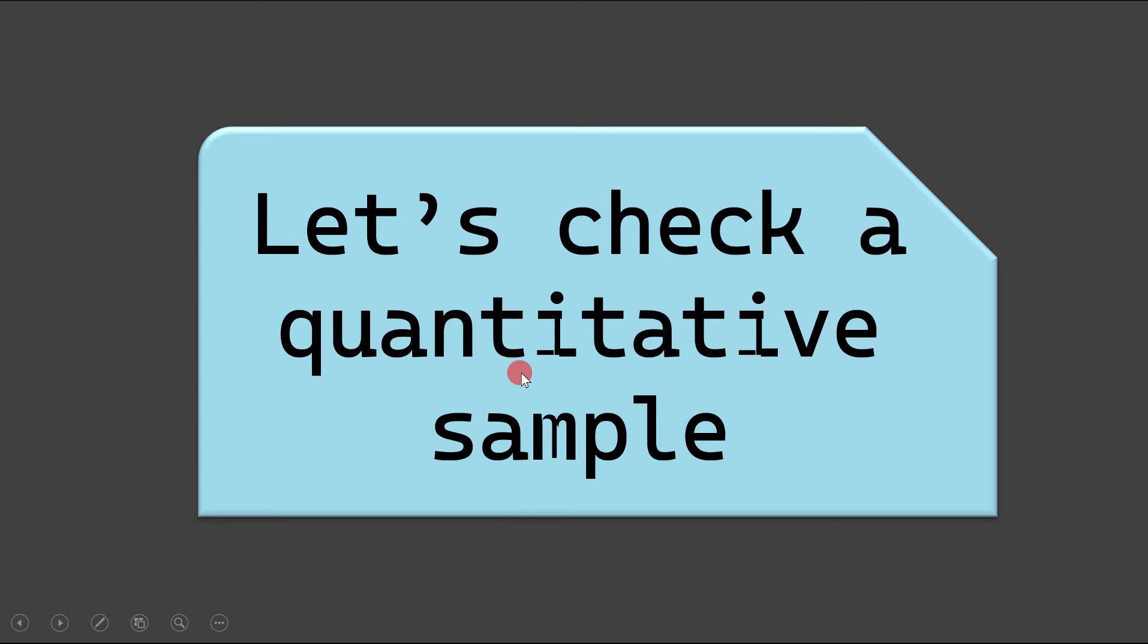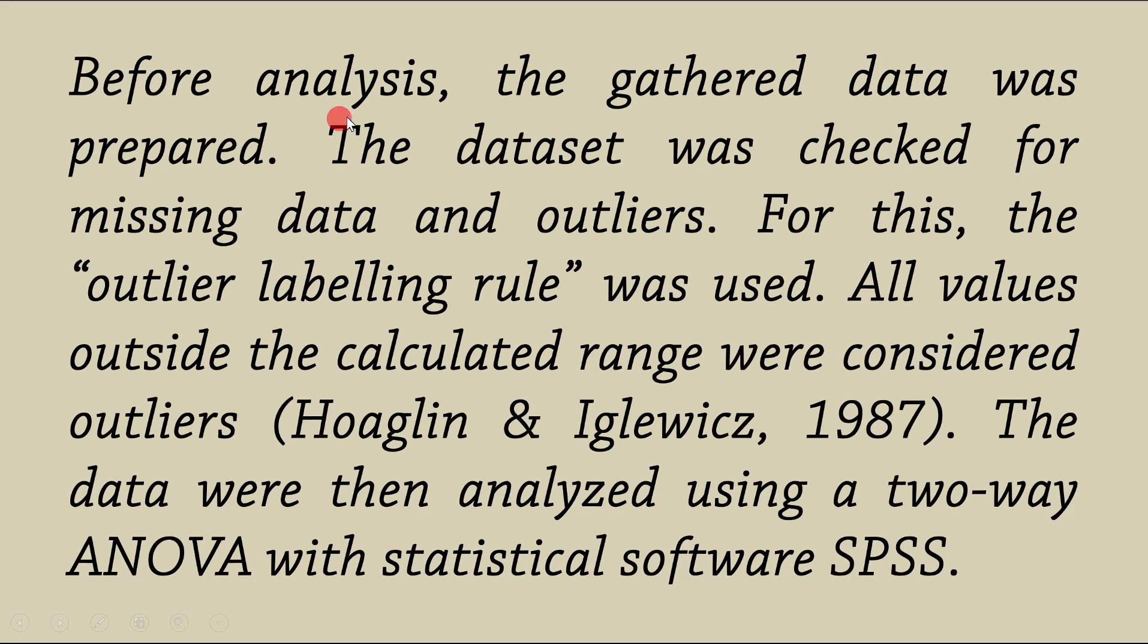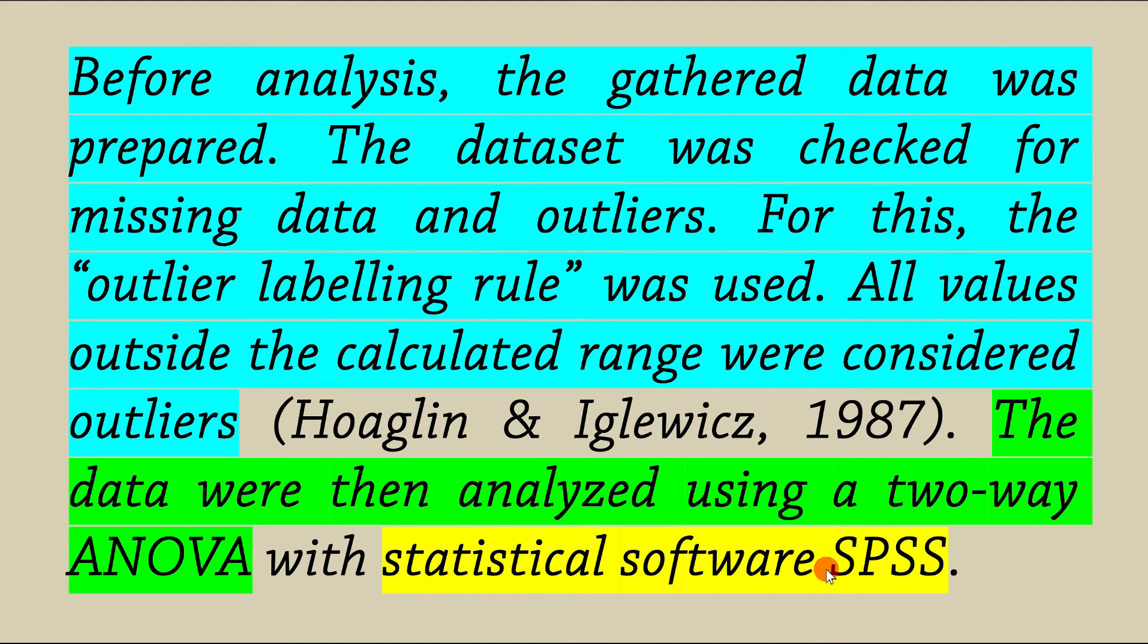Let's consider a quantitative sample. Before analysis, the gathered data was prepared. The dataset was checked for missing data and outliers. For this, the outlier labeling rule was used. All values outside the calculated range were considered outliers. Here is the citation for that method. The data were analyzed using a two-way ANOVA with statistical software SESS. Let's highlight the major parts.